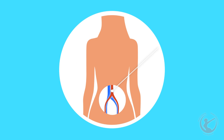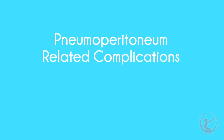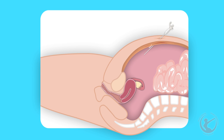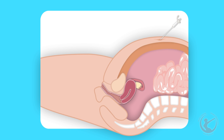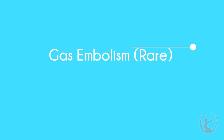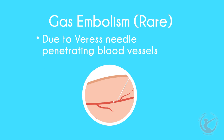This includes the aorta, vena cava or the common iliac vessels. It can be catastrophic. Pneumoperitoneum related complications — emphysema means the presence of gas under the skin. This usually resolves spontaneously and is due to gas leaking out around the port sites but outside the peritoneum, or when the Veress needle has not reached the peritoneal cavity, especially in obese patients. Gas embolism is a rare but mortal complication. It results from the introduction of gas through the Veress needle into the large veins.